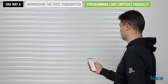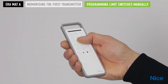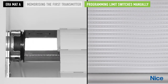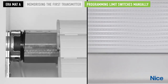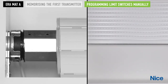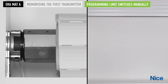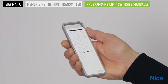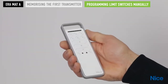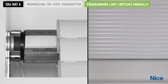The limit switches are set. To verify that programming has been successful, press the up arrow key on the transmitter briefly and check that the rolling shutter moves up as far as the upper limit switch. Then press the down arrow key on the transmitter briefly and check that the rolling shutter moves down as far as the lower limit switch.